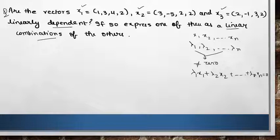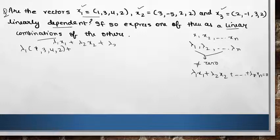So what we have is lambda 1 x1 which is (1, 3, 4, 2) plus lambda 2 x2 plus lambda 3 x3 should equal 0. We have to find out the values of lambdas, and if they are not 0s then we can say yes, these are linearly dependent vectors.